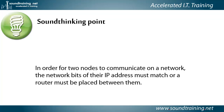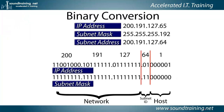Now let's take a look at an example that may throw a wrench in the works — but it's the same concept. The network architect stole two bits from the host portion of the address. Now we have a subnet mask of 255.255.255.192. What does that mean?